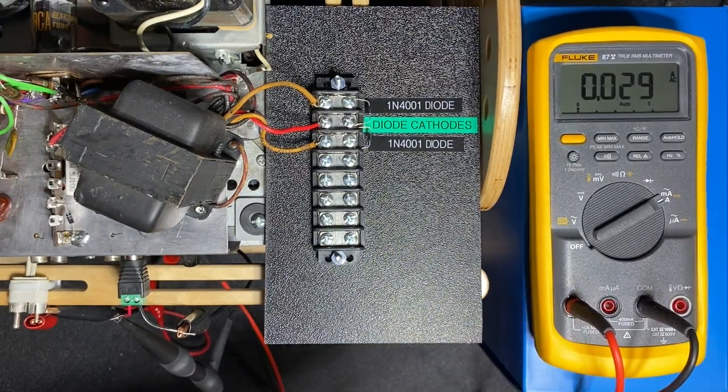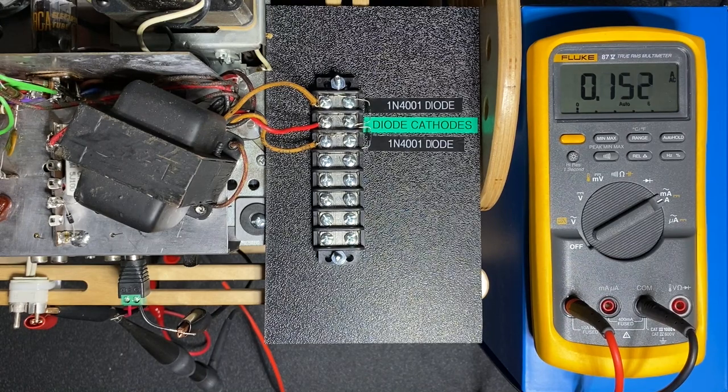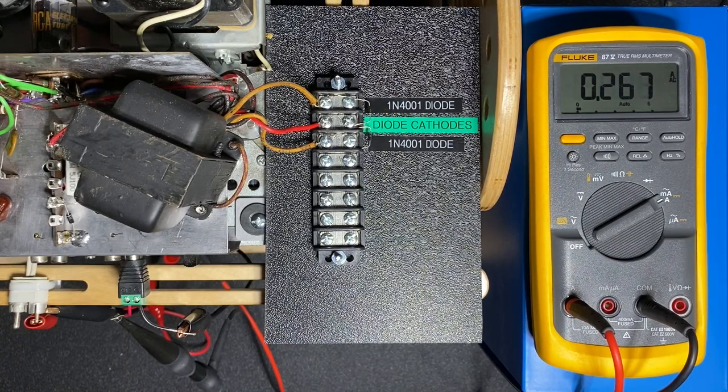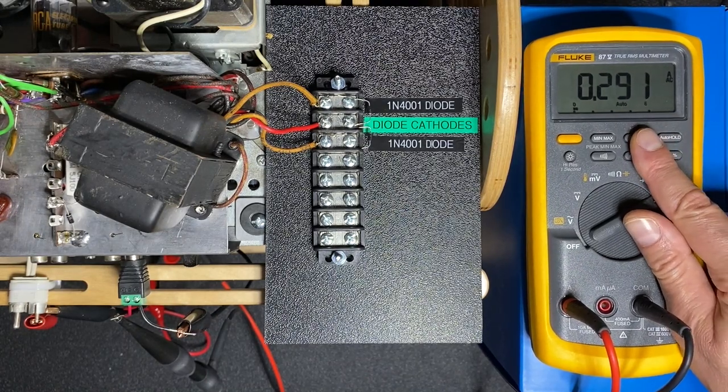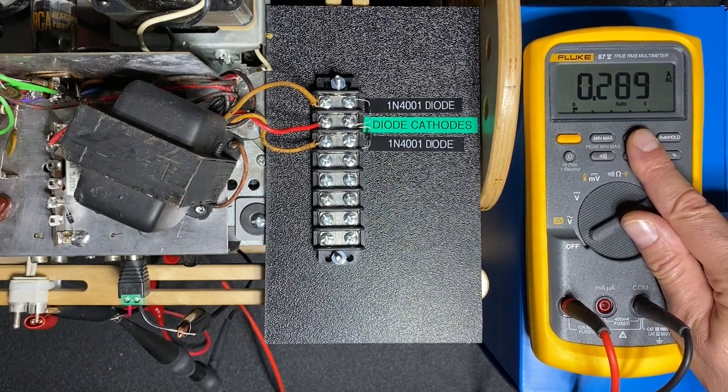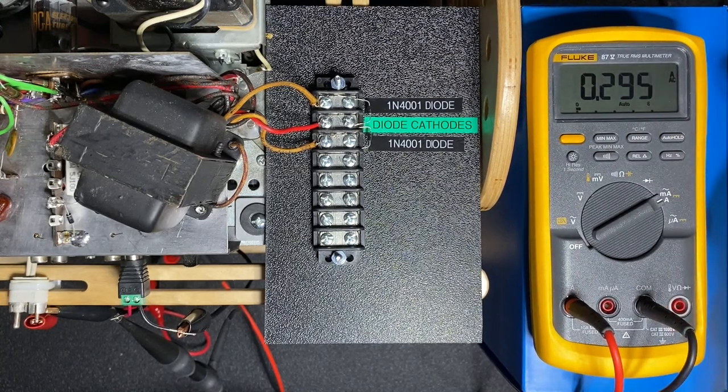Let's put the fluke into current mode power up the player again and see how much current we have and you can see now that we have about 0.29 amps flowing through the circuit.